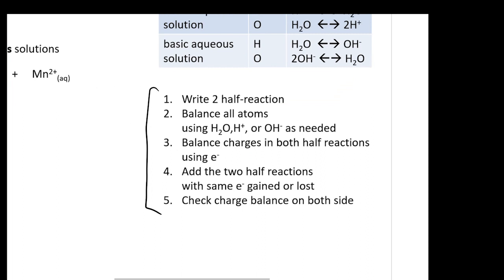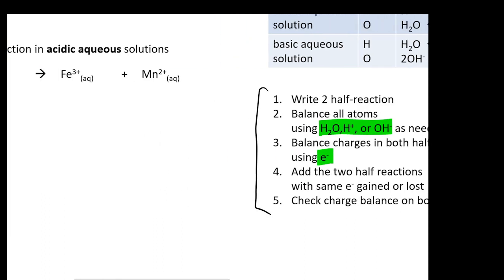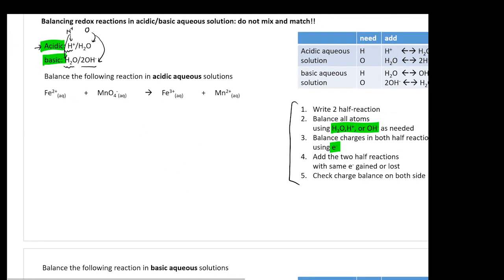Once you identify what kind of solution you have, the first step is to write out the two half-reactions. Second, balance all atoms using H2O, H+, or OH- depending on the solution. Third, balance the charges using electrons. Then balance the total electrons in the two half-reactions and add them up. It sounds complicated, but if we do one example, you will feel a lot more comfortable.